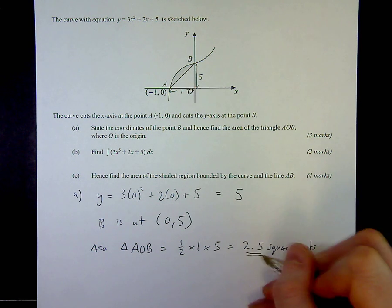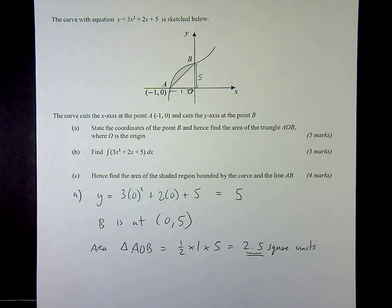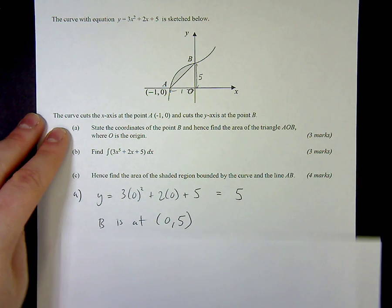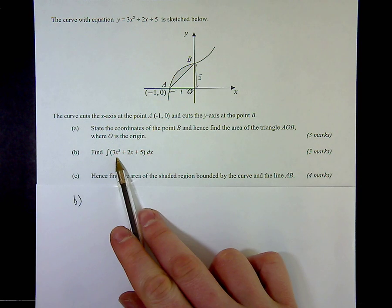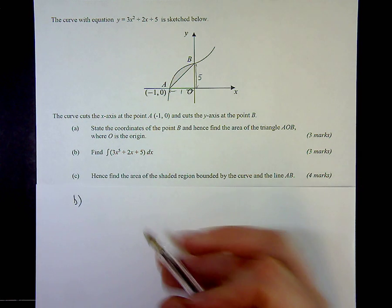For section B, I need to do a bit of integration, so I'll do this on new paper to find the integral of 3x squared plus 2x plus 5 dx.